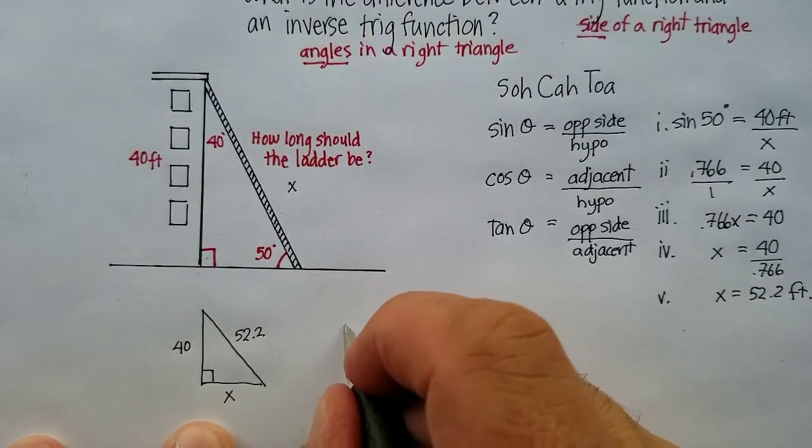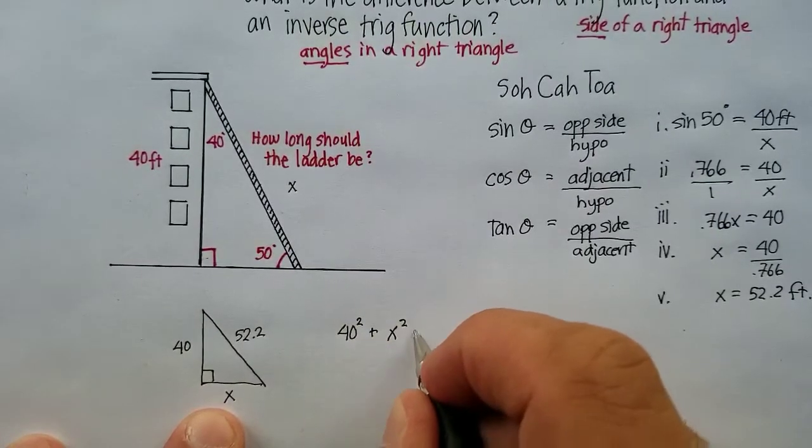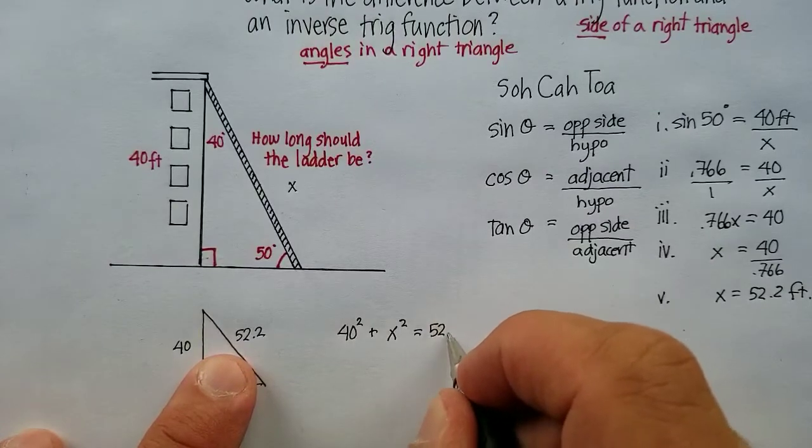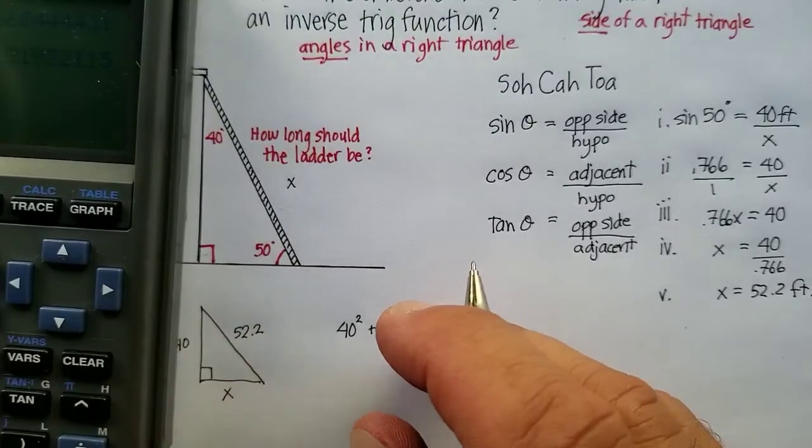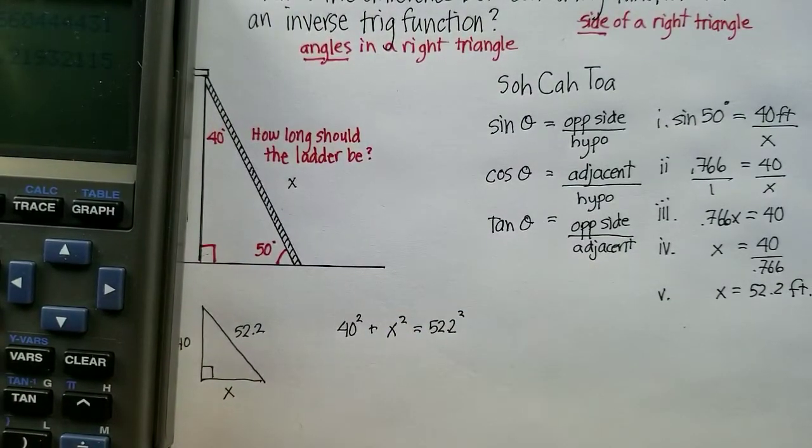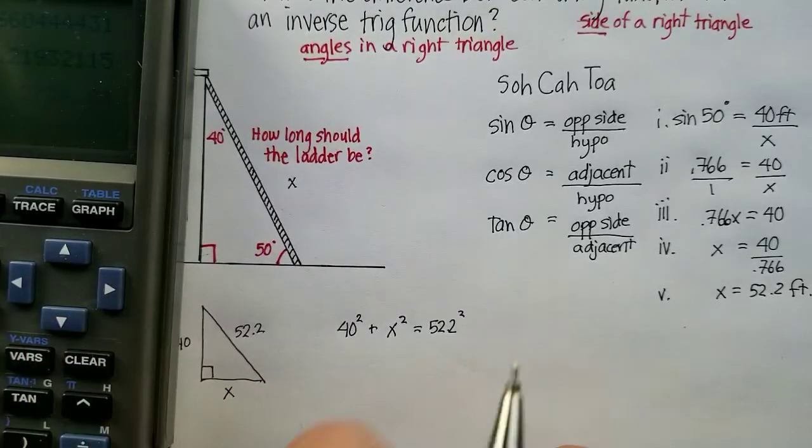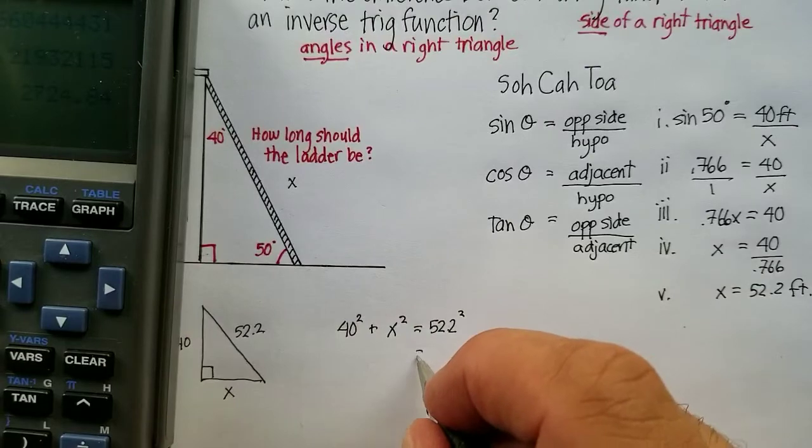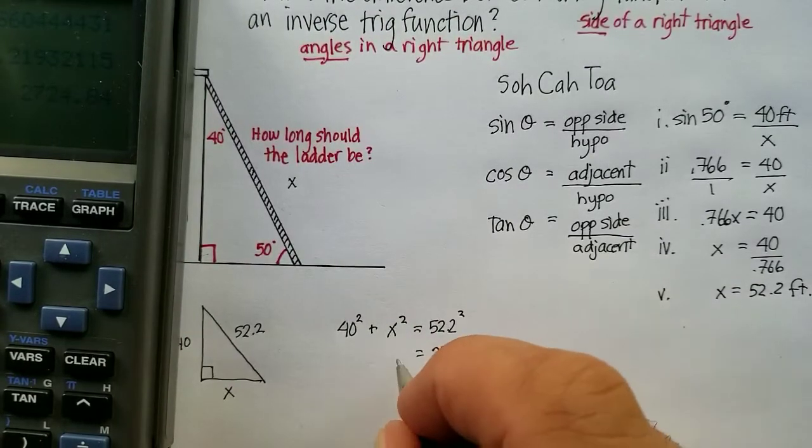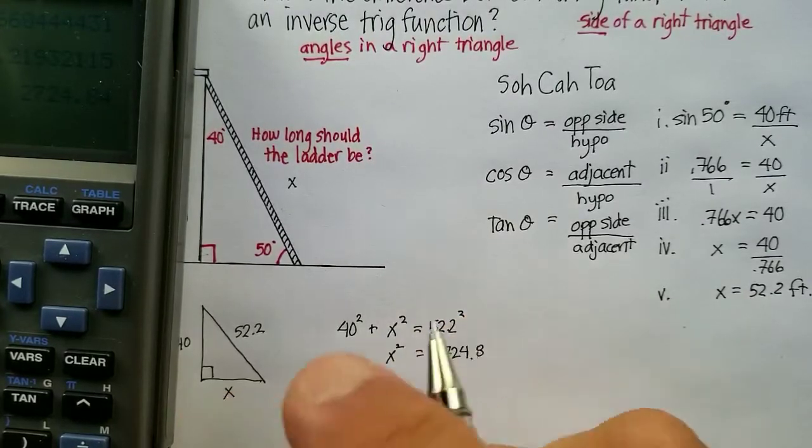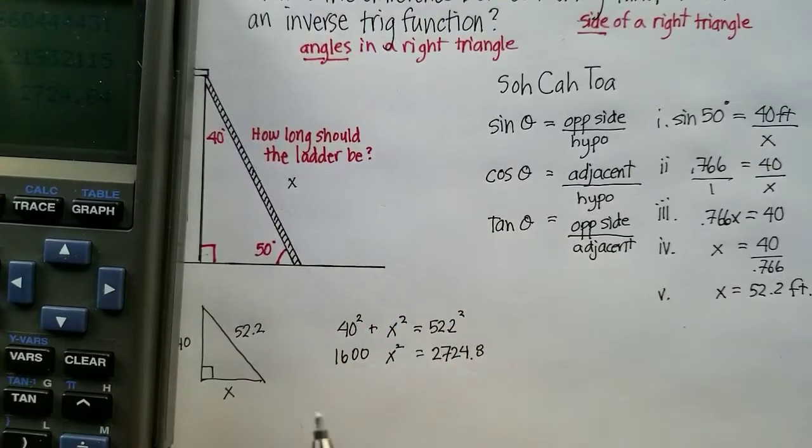So, I can say that 40 squared plus x squared is equal to 52.2 squared. Let's just do some quick calculations here. 52.2 squared is equal to 2,724.8. We know that 40 squared is 1,600. Subtract both sides.